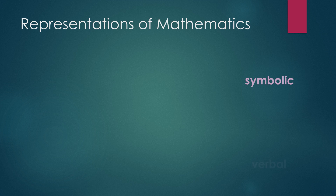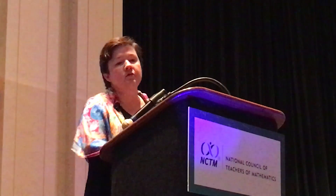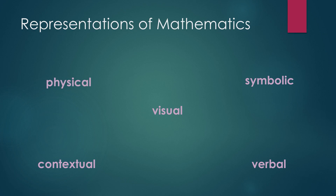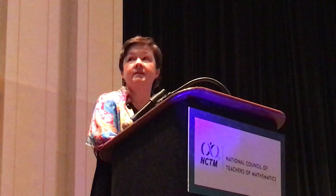We want to establish a strong foundation and keep them moving. So we use all the different representations that we have. If we bring together the physical representation with the contextual representation, we end up with narrative — we end up with mathematics as story. And the story is the math. This isn't read a story then we do math. This is that the story is the math. It's where it's grounded.